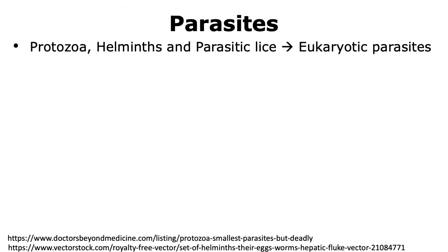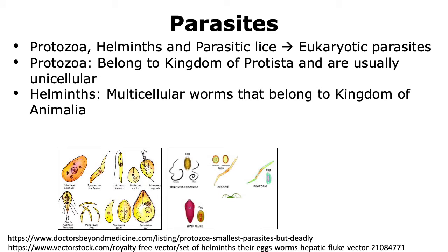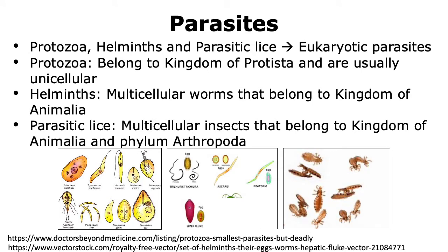There are many different organisms that can cause infections, but protozoa, helminths, and parasitic lice are considered the eukaryotic organisms that act as parasites. Protozoa are unicellular organisms that belong to the kingdom Protista, while helminths belong to the kingdom Animalia and are multicellular worms. Parasitic lice, on the other hand, are animals that come under the phylum Arthropoda, and hence they are insects.